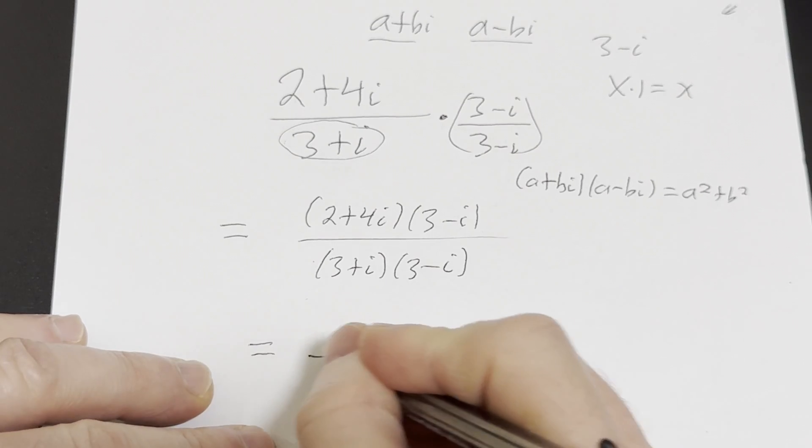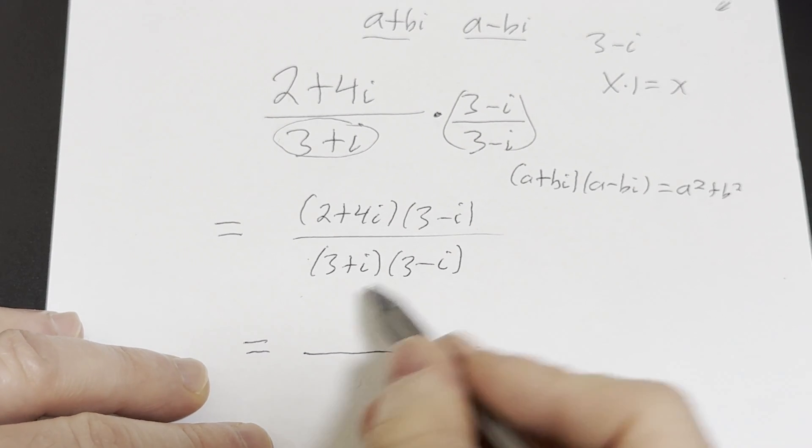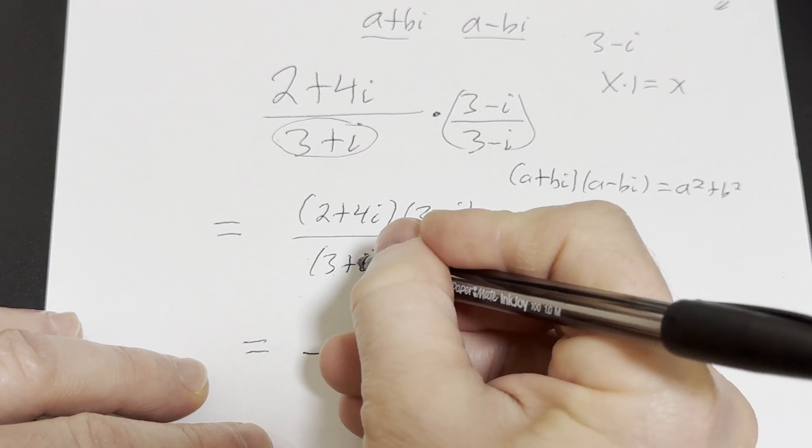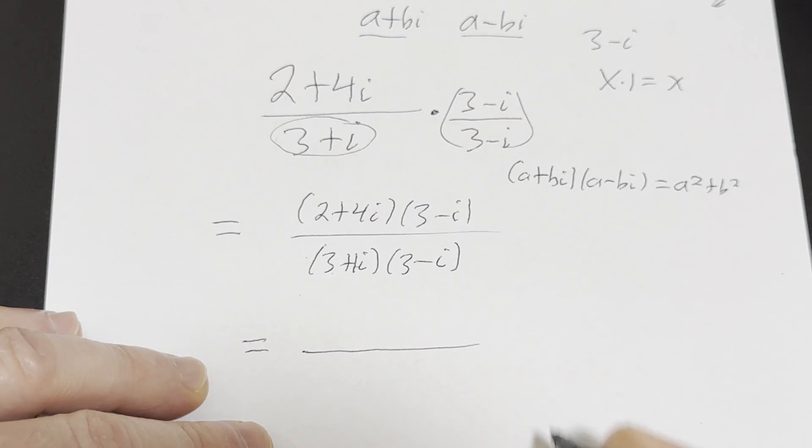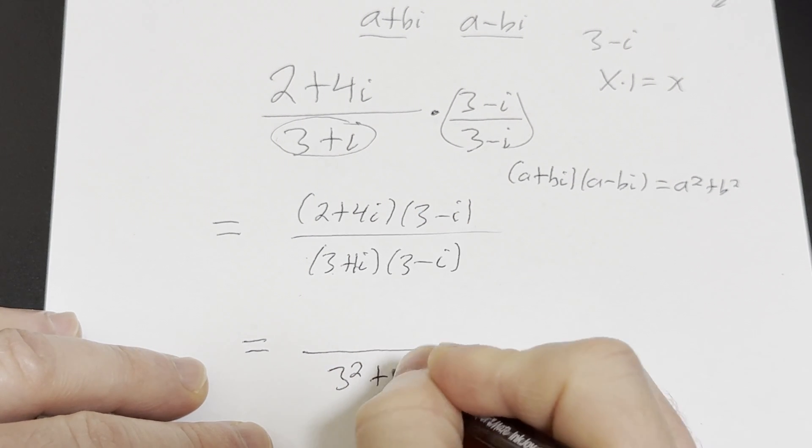Okay, so this is equal to, so in the denominator, let's see our a here is going to be 3 and our b is 1. There's really an invisible 1 here in front of the i. So this is 3 squared plus 1 squared.